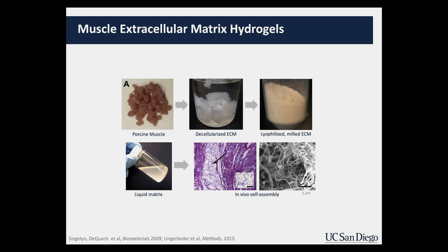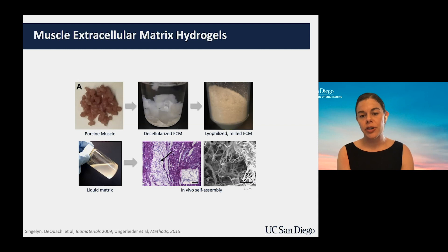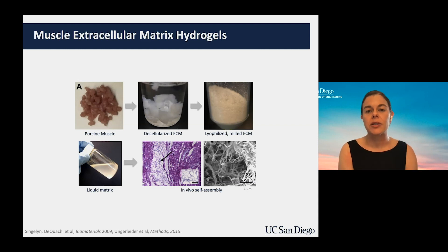We've made these extracellular matrix hydrogels from porcine skeletal muscle and porcine cardiac tissue, since one of our main focuses is treating the heart after a heart attack and treating skeletal muscle in peripheral artery disease, where there is low blood flow particularly to the legs. But you can generally do this similar process to create ECM hydrogels from all different kinds of tissue.